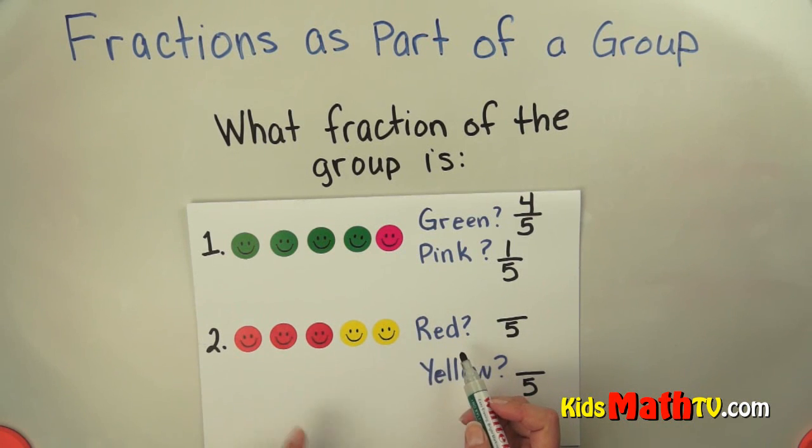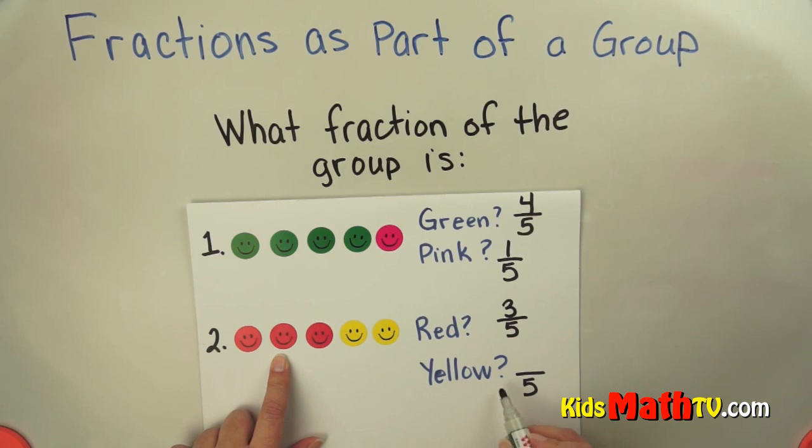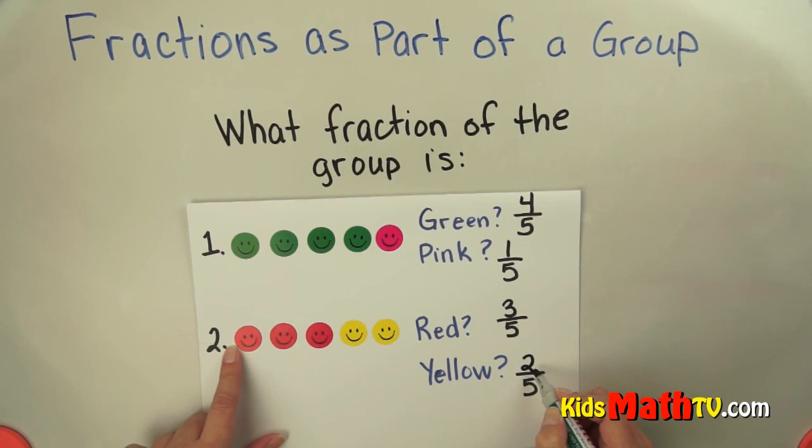How many are red? I count the red - one, two, three red out of five in the group. How many are yellow? One, two are yellow out of five in the group.